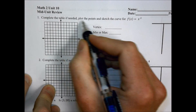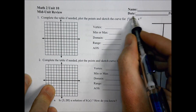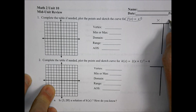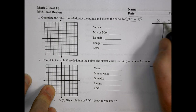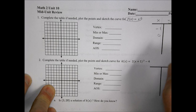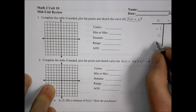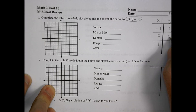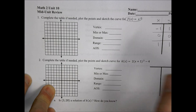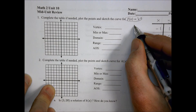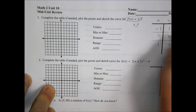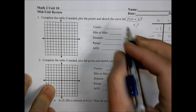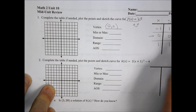It says complete the table if needed, plot the points, and sketch the curve for f(x) = x². You can make an x and y table. Let's say we do a point at negative one, zero, and one. Negative one squared is one, zero squared is zero, one squared is one. That positive value tells me this is going to be curving up, and from my table the vertex is going to be at (0, 0).